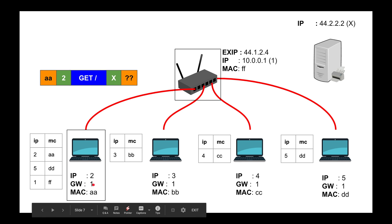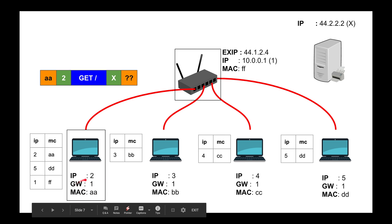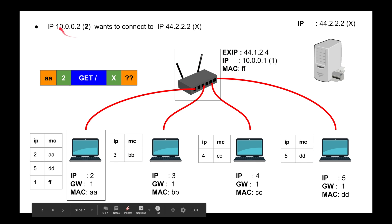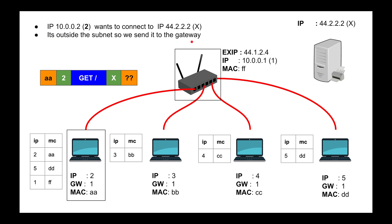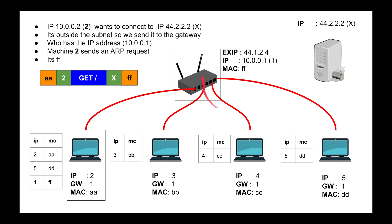I know the IP address of the gateway — it's 10.0.0.1 — but I do not know its MAC address. When you connect to Wi-Fi you see an entry called 'gateway,' which is your router. So I do an ARP request for the gateway: since the destination is outside the subnet, I ask who has the IP address of the gateway. My machine sends that ARP request and gets back the MAC address — let's call it FF. Once I have that MAC, I build the frame and send it to the router.